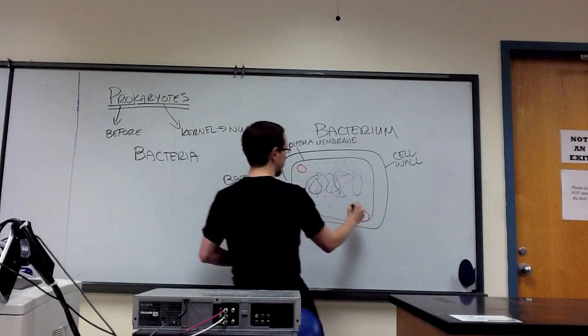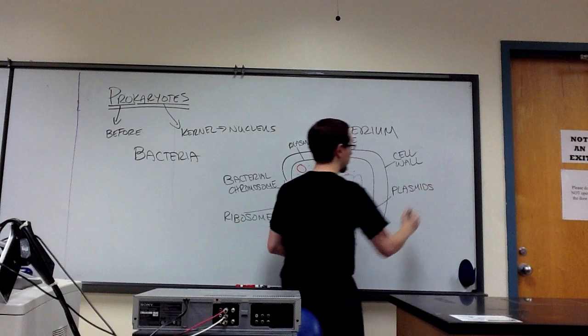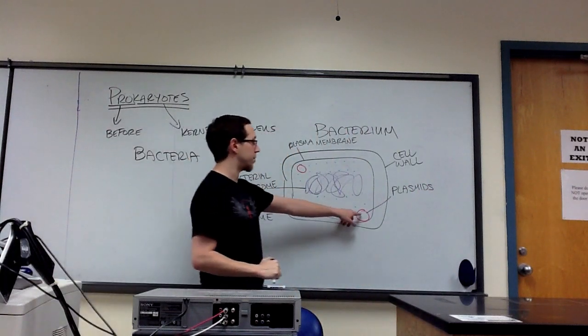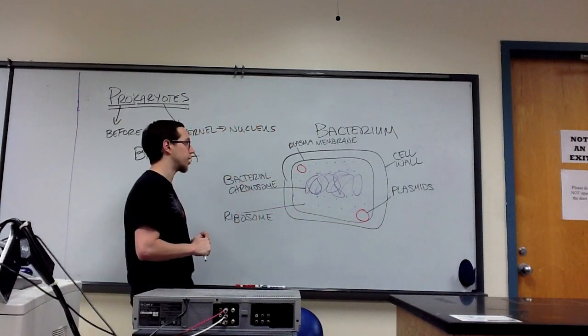Finally, these red circles are referred to as plasmids. These are circular pieces of nucleic acids that can be acquired by the cell from its surrounding environment or from other cells.